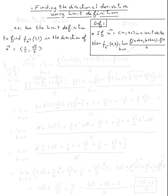The topic is finding the directional derivative using the limit definition. Let's do this example: use the limit definition to find the directional derivative at a point in the direction of u equal to the vector (1/2, √3/2) at the point (1, 3).